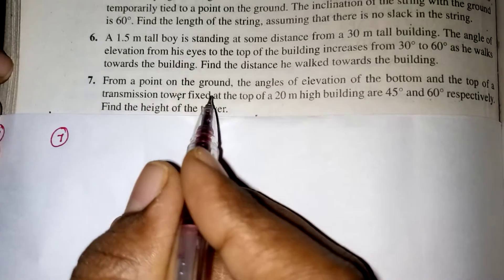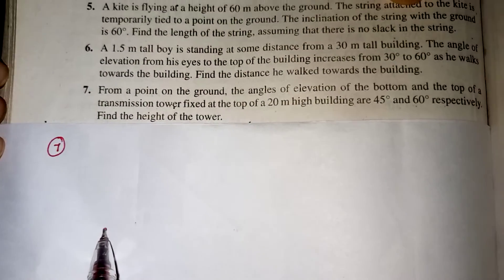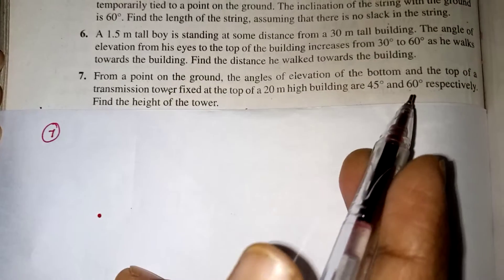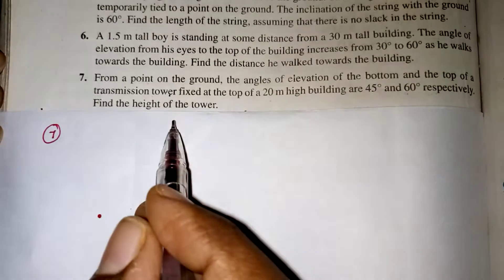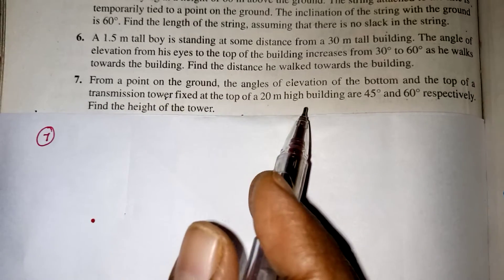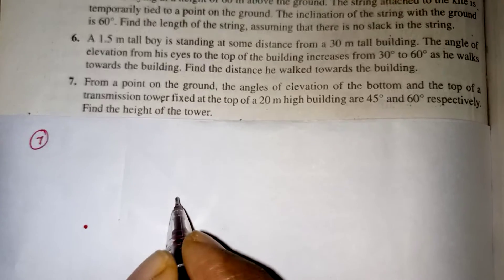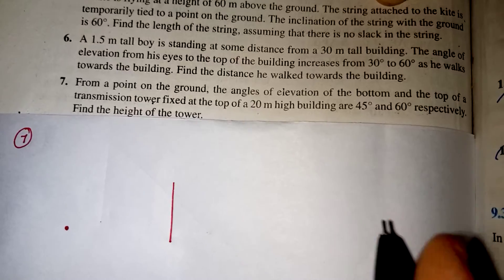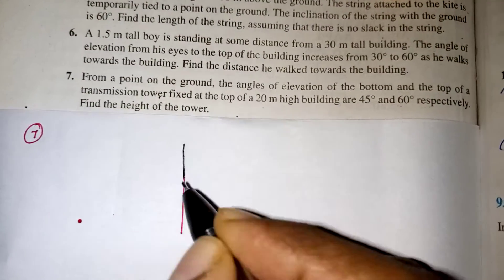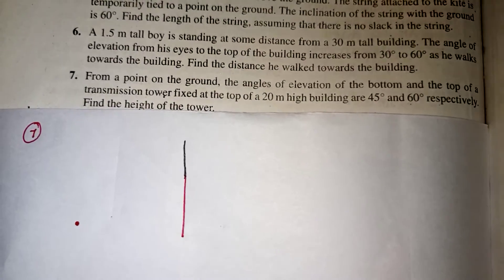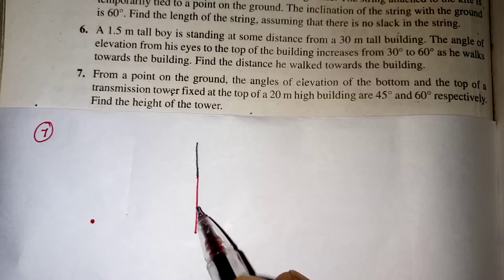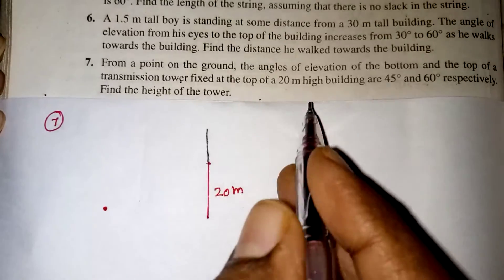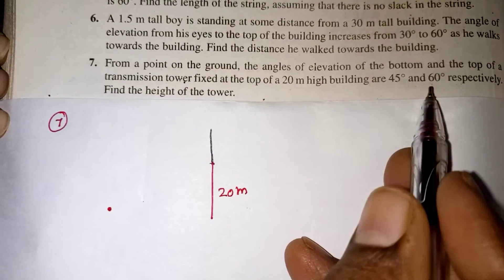From a point on the ground, we have taken a point. The angle of elevation of the bottom and top of the transmission tower fixed at the top of 20 meter high building. So there is a 20 meter high building and on the top of the high building they have a tower.